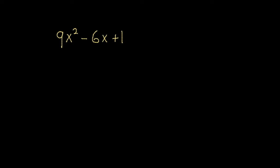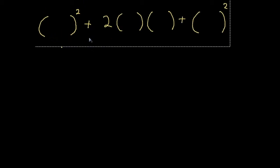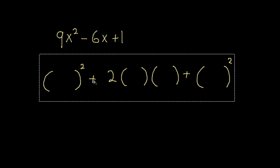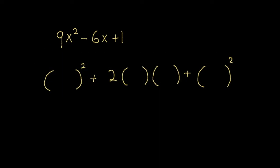So the first example I want to go through is the following: I want to factorize 9x squared minus 6x plus 1. I'm going to paste the form that we used in the previous video — it's the same one but this is just another form I've created because I need to make the brackets a little bit bigger.